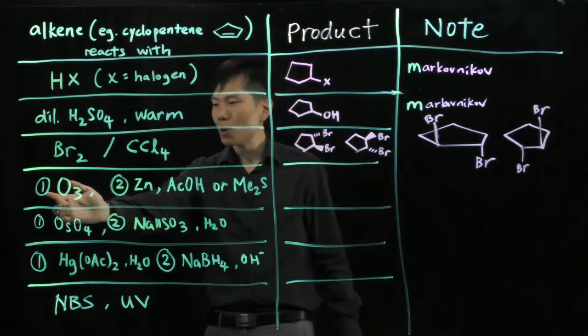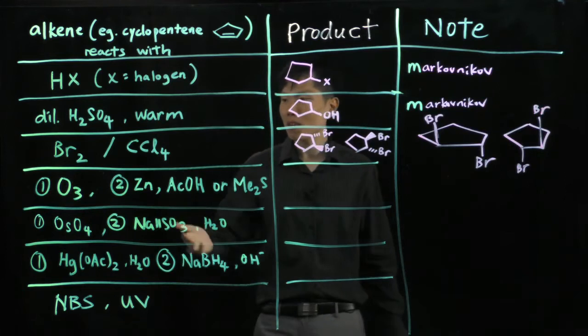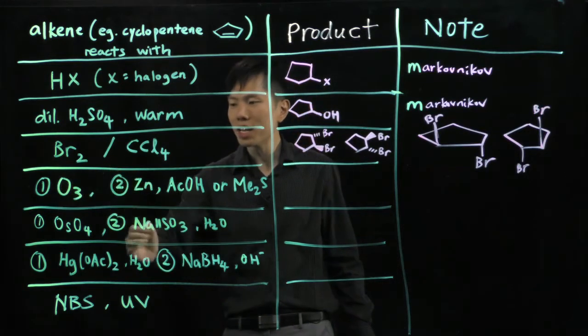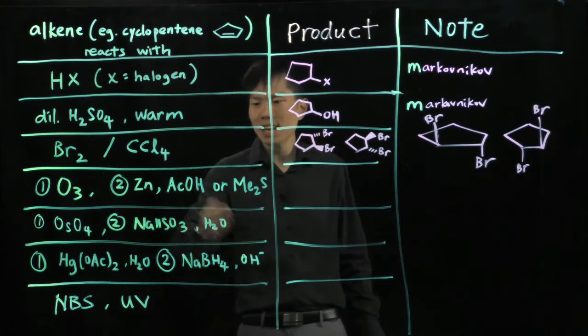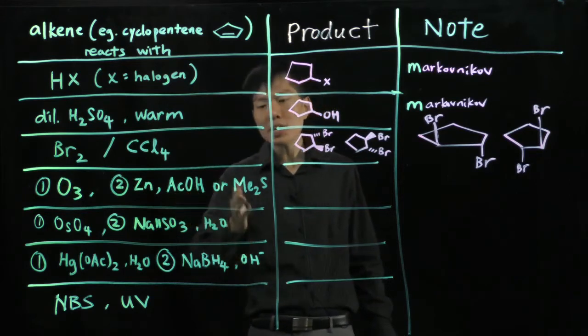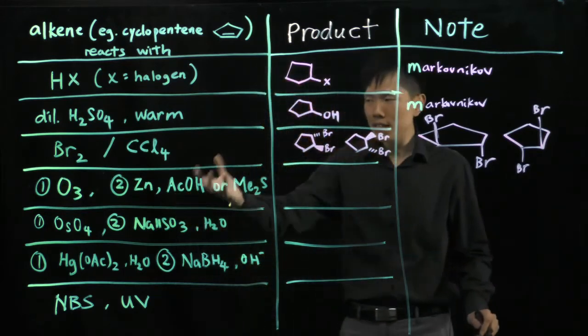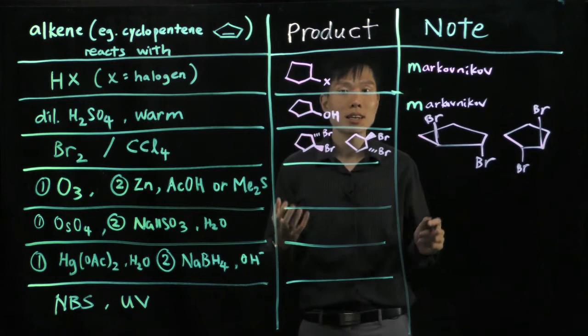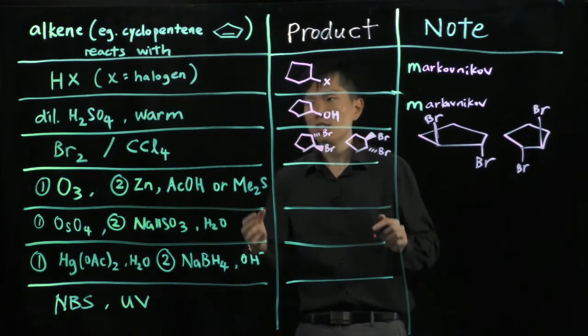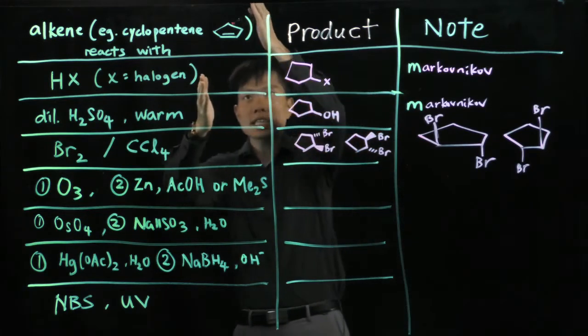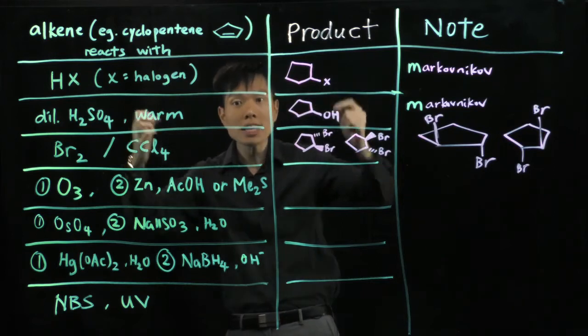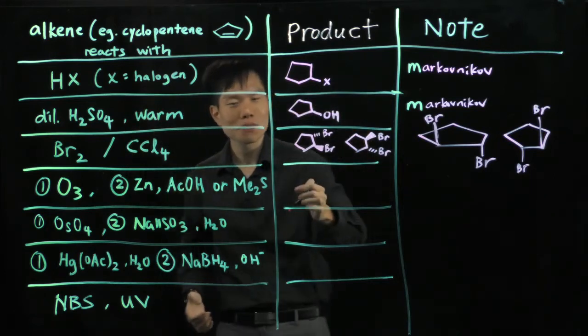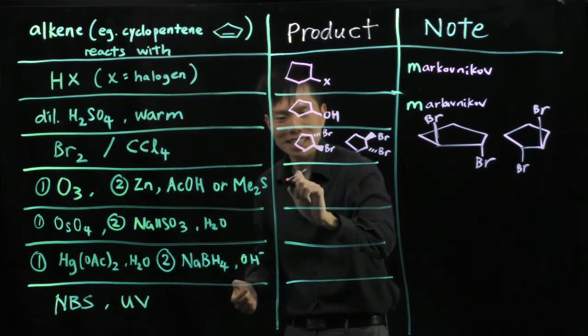Next, we have ozonolysis. Ozone found in the ozone layer. Step one and step two, we add zinc and acetic acid, or you can add dimethyl sulfide. In here, you have a carbon-carbon double bond cleavage. Remember I told you before, you just cut the C-C bond, you pull apart and you insert oxygen inside.